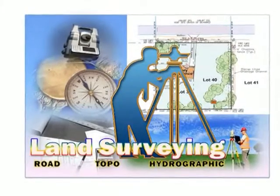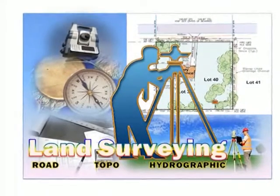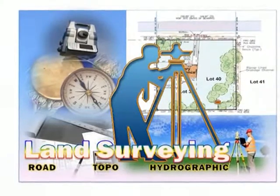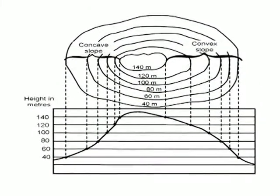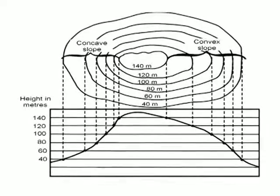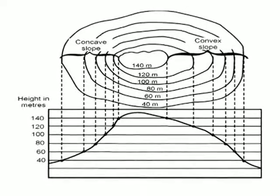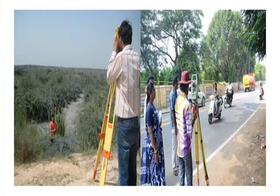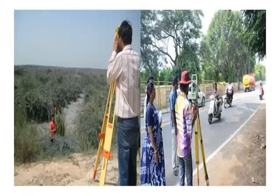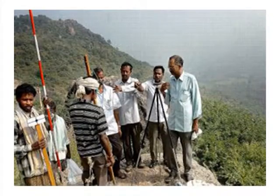Surveyors capture spot elevations and use mathematical formulae to interpolate the elevation, shape and location of contour lines. Most land surveyors produce data on landform by recording spot elevations at irregular intervals, attempting usually to capture important features in the landscape.